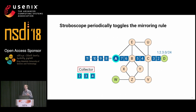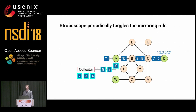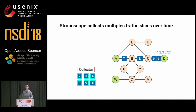We can iterate this process over time. After a while, I can activate the mirroring rule again, get mirrored packets, have it deactivated, and I've got a second traffic slice — a second snapshot of what was getting through that particular router at various moments in time.